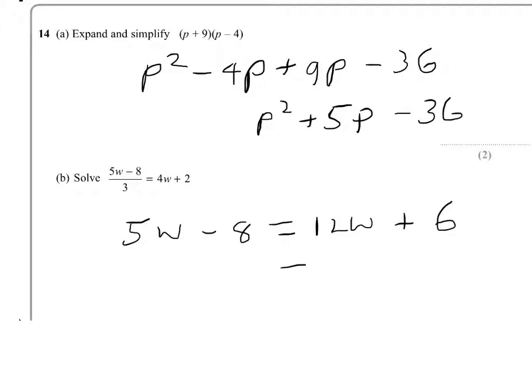Now, we'll move the numbers to the left and the letters to the right. If I move my numbers over, I get minus 6 minus 8, which is minus 14. And if I take my 5w to the other side, it becomes a minus. And I get 12w subtract that 5w gives me 7w. Dividing my minus 14 by 7 gives me w. And so, w equals minus 2.